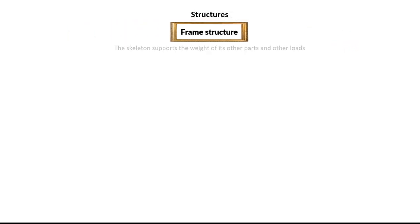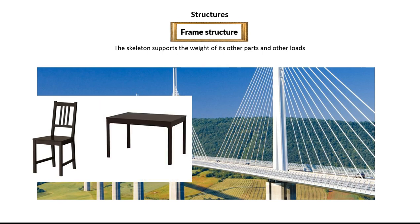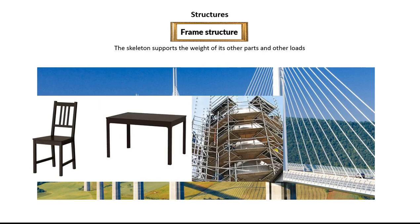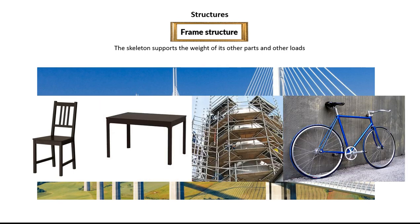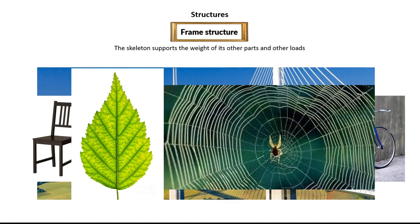Let's first look at frame structures. The skeleton of a frame structure supports the weight of the other parts and the loads placed on it. Examples are this bridge — a suspension bridge — a chair and table, scaffolding, and a bicycle. These are human-made examples. In nature, leaves and cobwebs or spiderwebs are also considered frame structures.